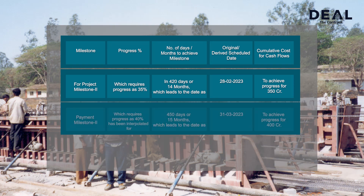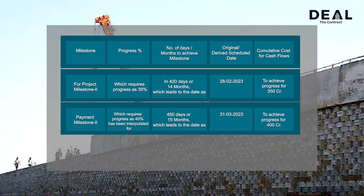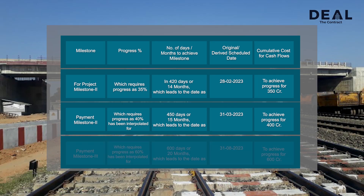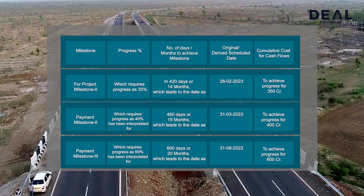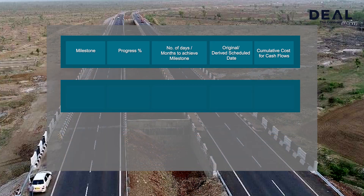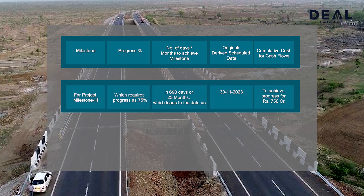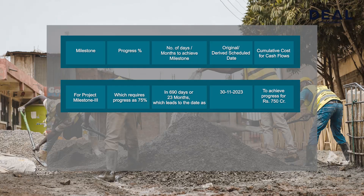Payment Milestone 2 requires 40% physical progress and has been interpolated, leading to a derived date to achieve progress worth Rs. 400 crore. Payment Milestone 3 requires 60% physical progress and has been interpolated for 600 days or 20 months, leading to a derived date to achieve progress worth Rs. 600 crore. Project Milestone 3, which requires 75% progress in 690 days or 23 months, leads to the date of 30th November 2023 to achieve progress worth Rs. 750 crore.